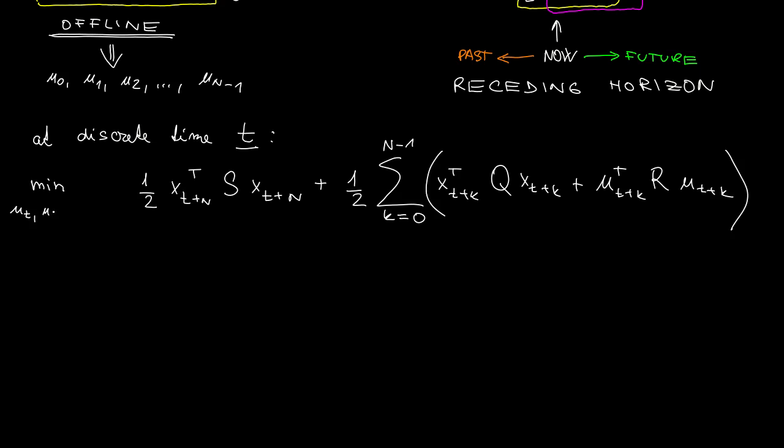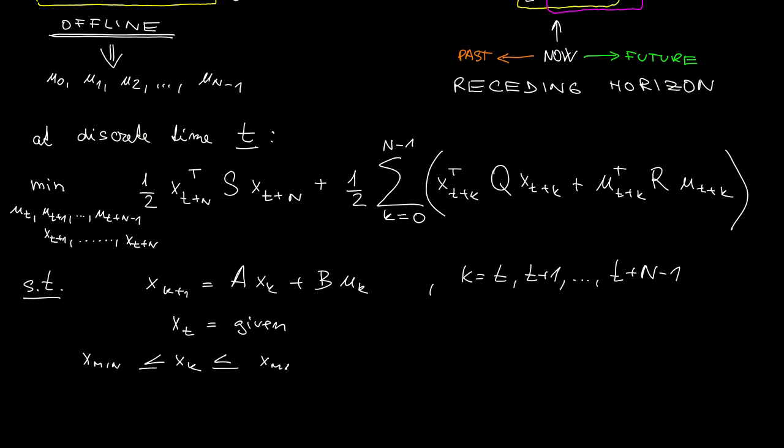So now we are doing the optimization over sequence of controls, and in principle over the sequence of states over the horizon of length capital N. And now these controls and states are coupled by the state equation as usual, and this state equation is initialized by the value of state at the current moment, that means at the beginning of the time interval at time that we labeled t. We can also impose additional constraints on the states and on the controls, and that's essentially it.